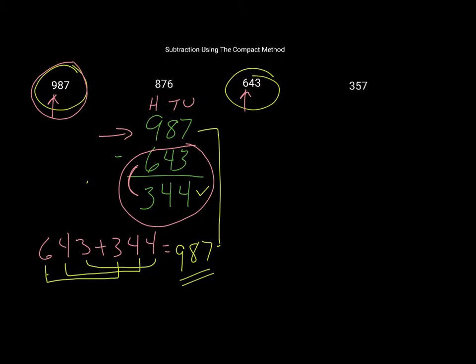Now I will try the next pair of numbers, which is 876 and 357. I have to decide which of those two numbers is going to go on top. Again, I'm looking at the hundreds digit there and there. Here I've got 300, here I've got 800. Clearly 800 is more than 300, so 876 is going to go on top. So 876 subtract 357.